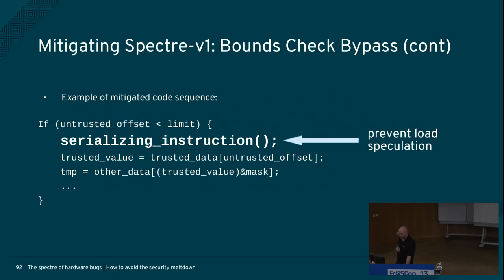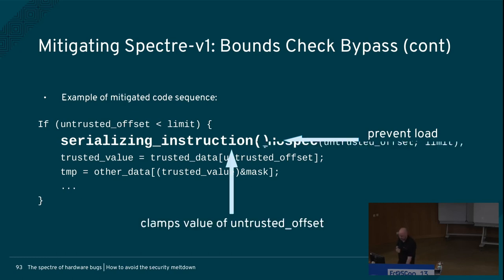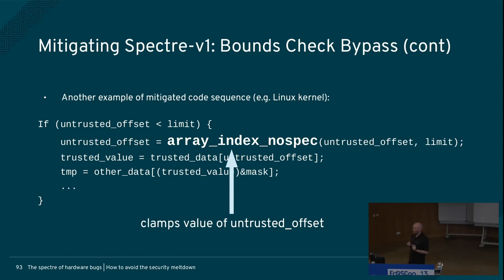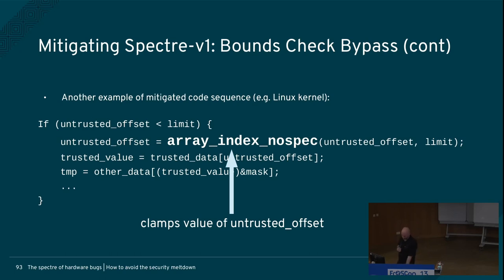Mitigating Spectre Variant 1: we can insert a serializing instruction — basically force things to go in order briefly. That's expensive but we can do it; that's what we did initially. Or we can do some fancy stuff: we can mask the offset so that if you try to speculate, you'll only ever see a value that's either zero or inside the bounds. In Linux there's something called array_index_nospec — a bit of interesting code used to effectively clamp and force that offset to be in bounds during speculation.